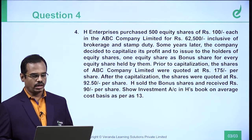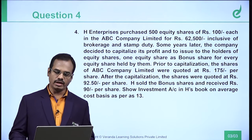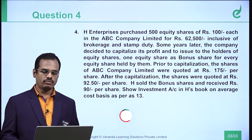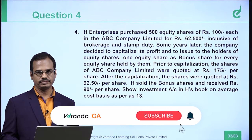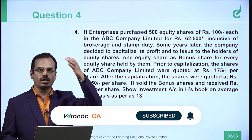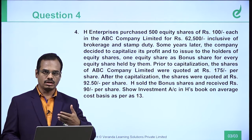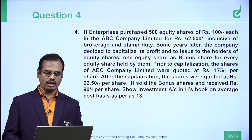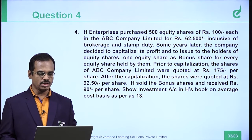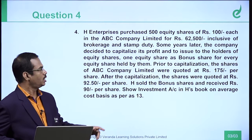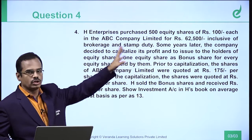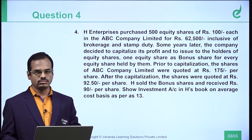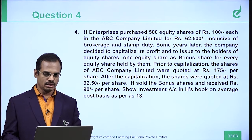H-Enterprises purchased 500 equity shares of Rs. 100 each in ABC Company Limited for Rs. 62,500. You need not do the working note for purchase price or add brokerage. Straight away you can take 62,500. This is inclusive of brokerage and stamp duty — that is the key word here. If you consider it as exclusive, then you would need to add stamp duty and brokerage, which is a different story.